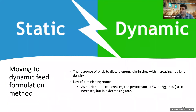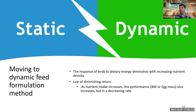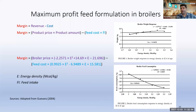The response of birds to dietary energy diminishes with increasing nutrient density — it follows the law of diminishing returns. As nutrient intake increases, performance such as body weight or egg mass also increases, but at a decreasing rate. We saw this in the fundamental graph shown earlier. Now let's dive into maximum profit feed formulation.